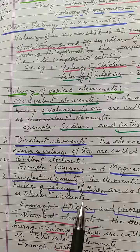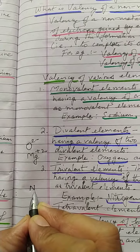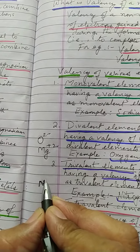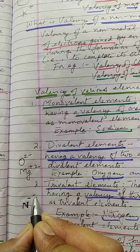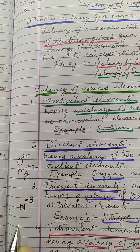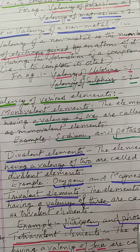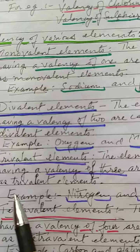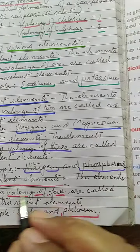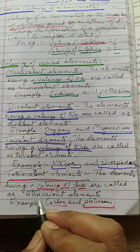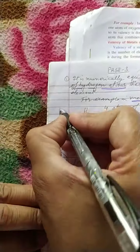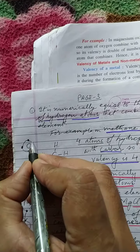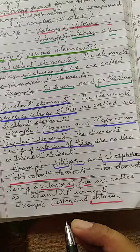Then there are trivalent elements — for example, nitrogen has a valency of three because it gains three electrons, and phosphorus is also trivalent. Elements having a valency of three are called trivalent elements. Then we have tetravalent elements — those with a valency of four. For example, carbon has a valency of four, so it is a tetravalent element.